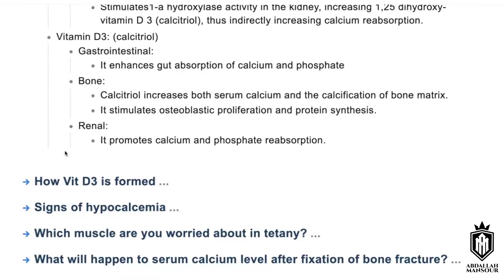How is vitamin D formed? Vitamin D is formed from cholesterol. When there is ultraviolet radiation from the sun on the skin, it is transformed to cholecalciferol. In the liver, it becomes 25-hydroxycholecalciferol. Then by one-alpha-hydroxylase in the kidney, it becomes 1,25-dihydroxycholecalciferol, which is the active form of vitamin D.